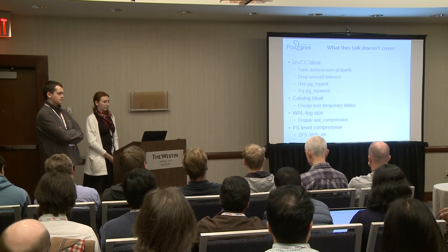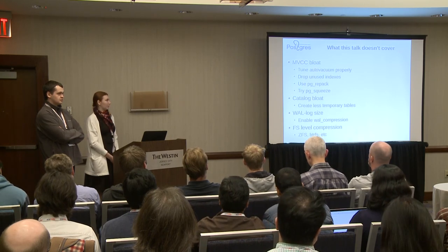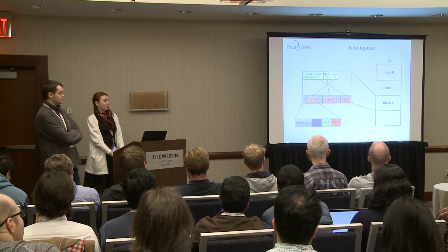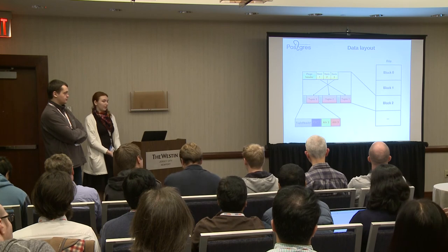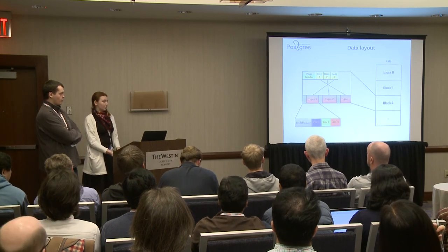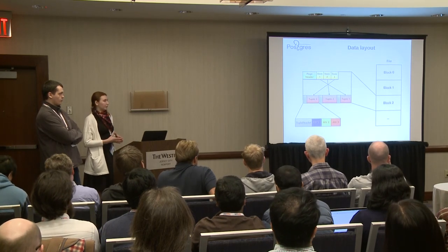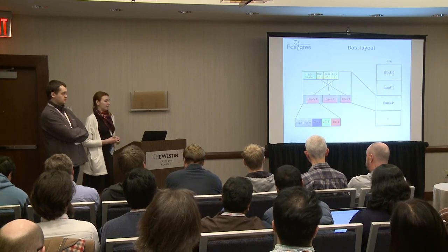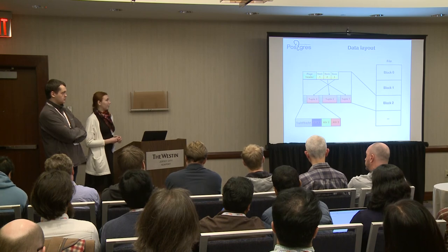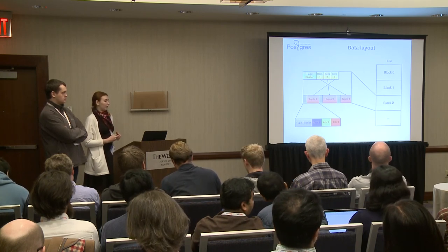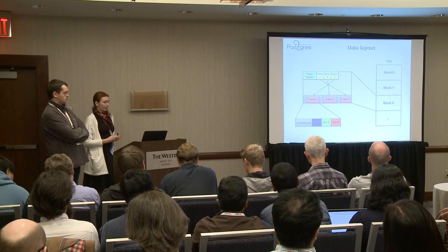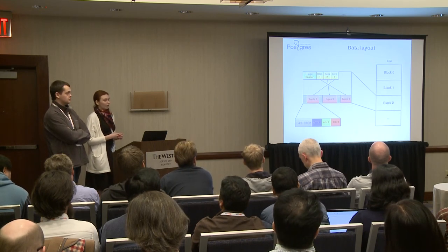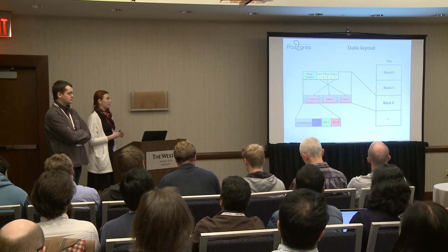You can also use file systems that support compression. Now let's look at how PostgreSQL stores data. It has row-oriented storage. The physical representation of a row is called a tuple. A tuple consists of a header and attributes. Tuples are placed in pages, which in turn form files. That is the format for all tables, indexes, and materialized views in PostgreSQL.